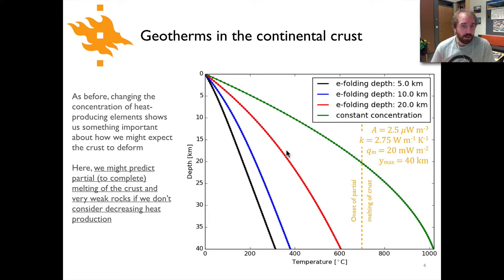One of the implications we can look at here right away is that this has a significant implication for the onset of partial melting of the crust. If we say that crust begins to partially melt at around 700 to maybe 750 degrees for upper crustal rock types, then our prediction for constant concentration of heat producing elements is that we would actually cross that line and begin partially melting the crust at a depth of about 20 kilometers.